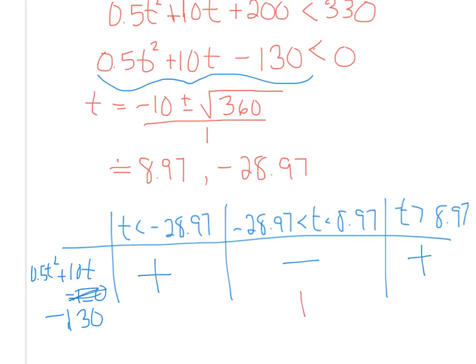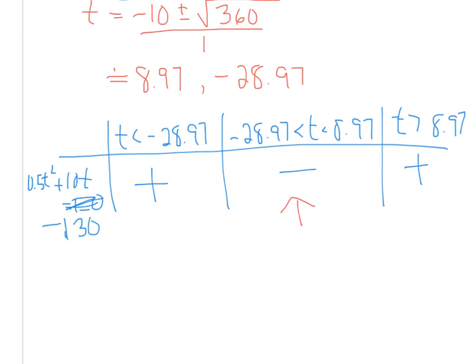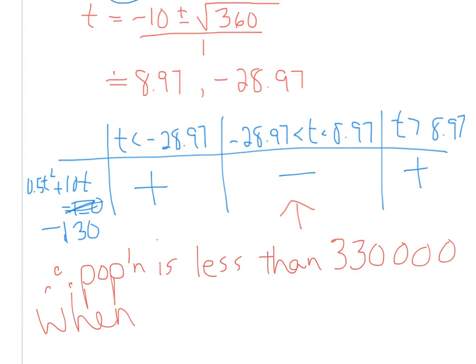Okay, so right here is our answer. Of course, that's when the population is less than 330,000. Okay, and we need to just now make sure, of course, with an application question that we interpret that. Okay, so what did we find out then? We found out that the population is less than 330,000. When, okay, T is approximately between, let's just round, negative 29 and 9. Okay, now, what does that really mean?